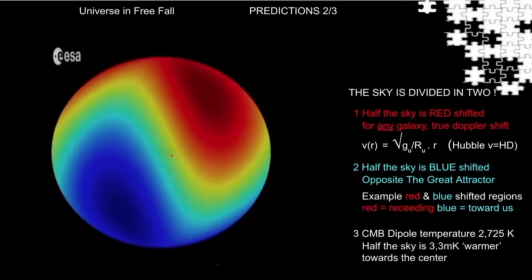It measures a temperature around 2.7 degrees Kelvin. A little warmer to the center, slightly colder on the opposite side. It was one of the first observations that supported the existence of a center.